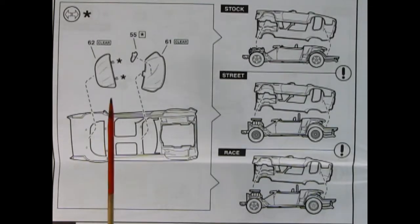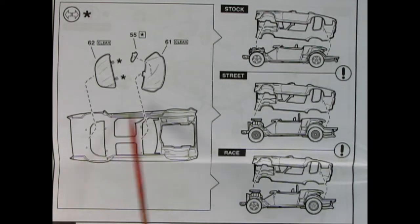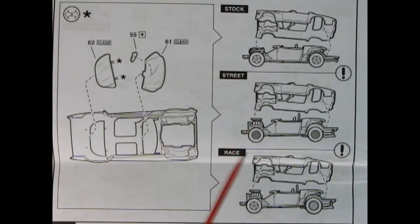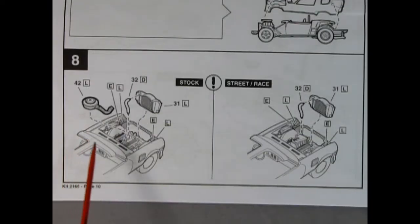Here we have the rear window being glued into place as well as the front window and our rearview mirror. Then our body drops into place on the stock, street and race chassis depending on how you built the earlier steps. Panel 8 shows our air cleaner being installed on top of our engine block for the stock version, and our upper radiator hose and the radiator wall and radiator all drop into place. For the street race version, since the blower is in there we just need to put in the radiator hose and the radiator.